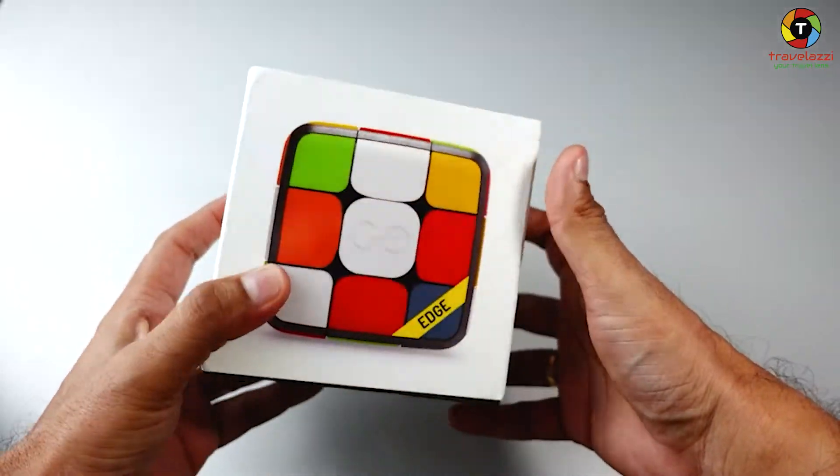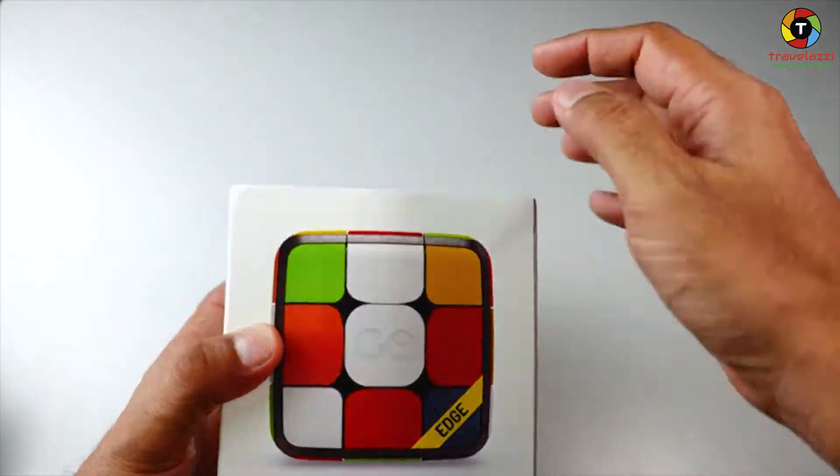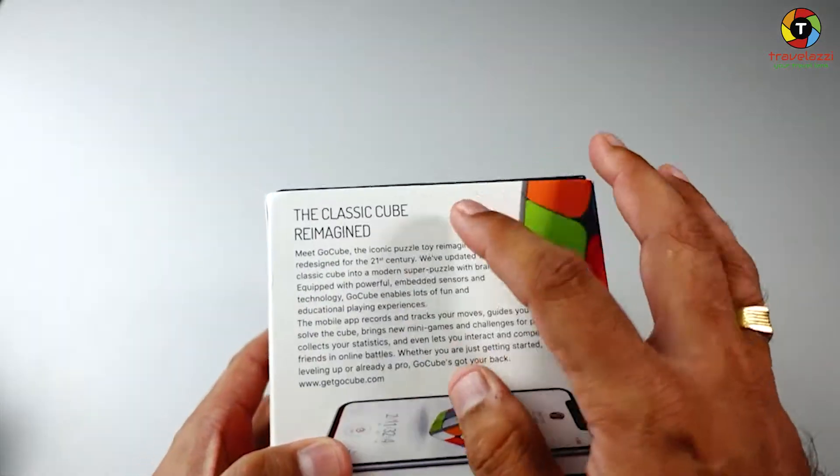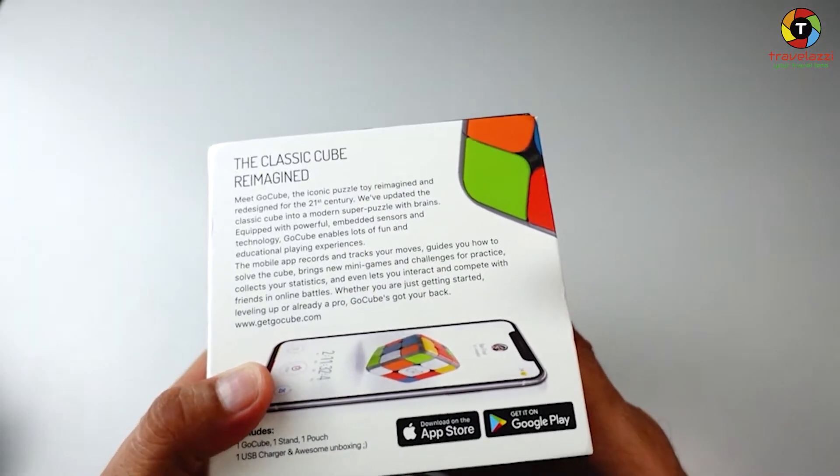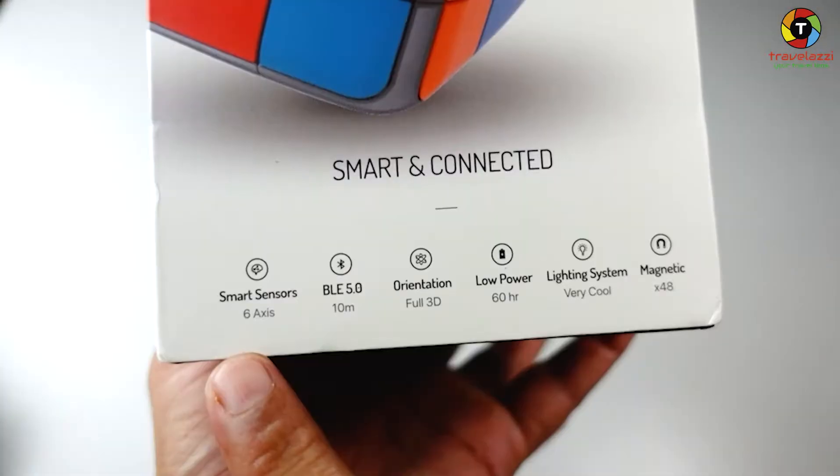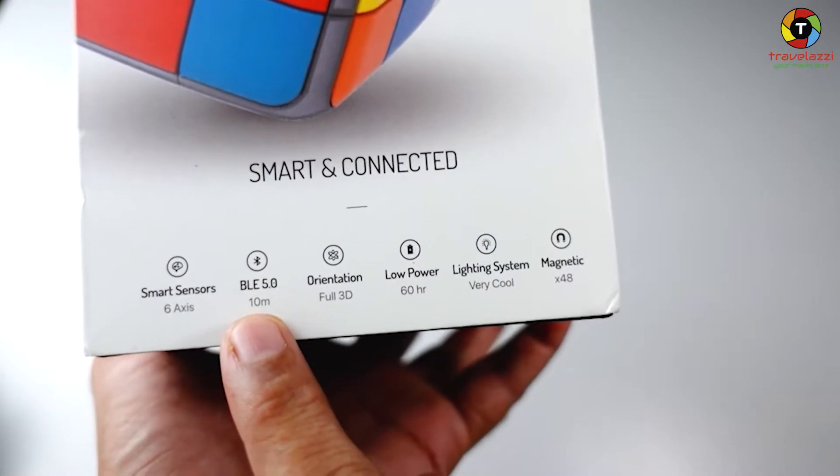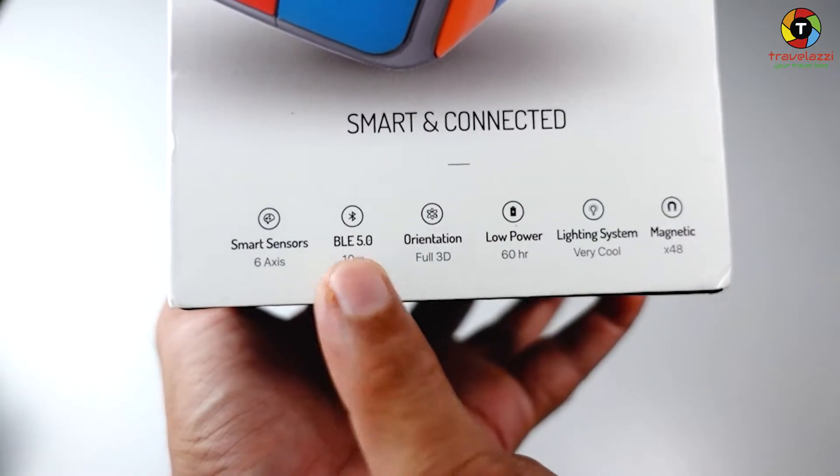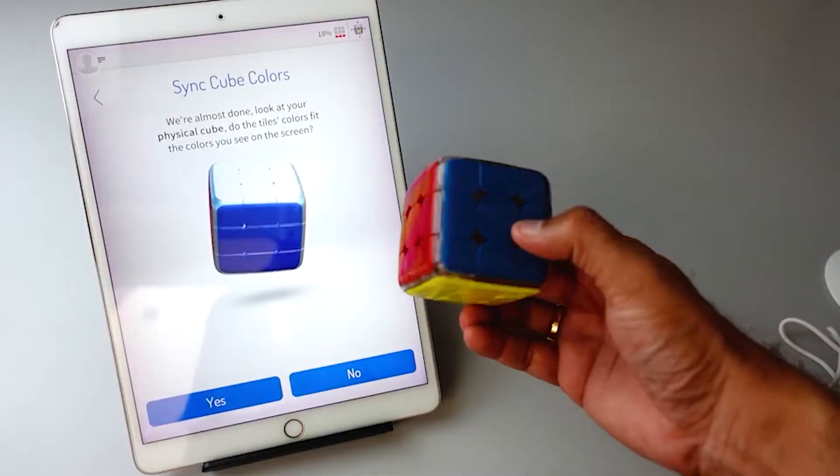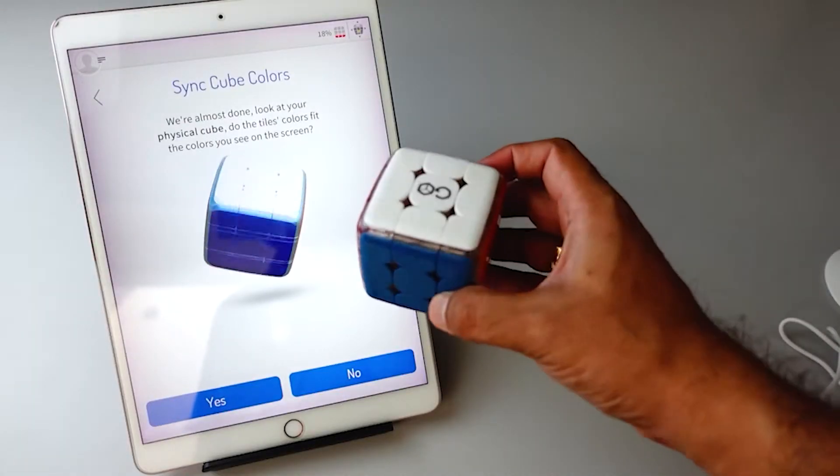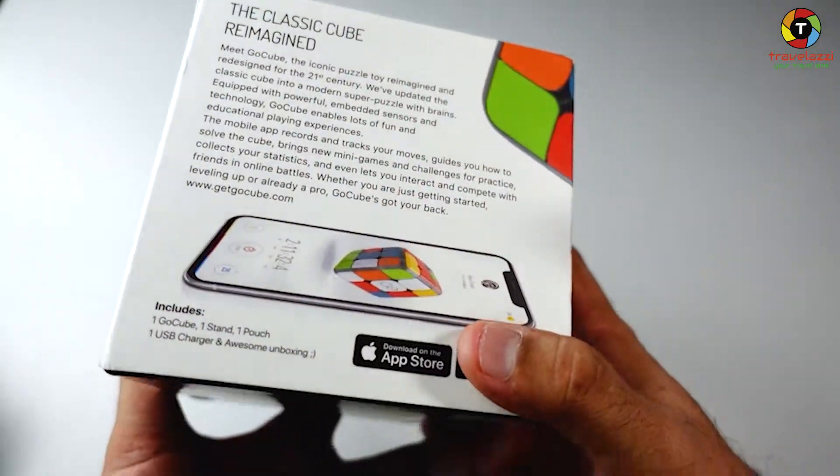Without further ado, let's get into the box. This is the front of the device with a beautiful picture of the cube inside the package. It's the classic cube reimagined, a total reimagination of what a traditional cube looks like. There are six-axis smart sensors in the device, it's Bluetooth 5.0 enabled with a maximum range of 10 meters, and provides full 3D orientation, which means when you move the device in your hand, you see the exact movement happening on your iPad or smartphone.